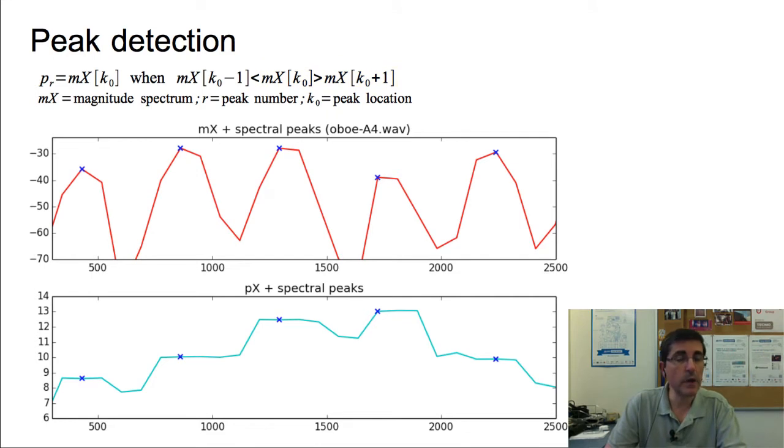In this plot we see local maxima for the different peaks. The crosses, the blue crosses, are local maxima. In the phase spectrum, we basically just read the location of this peak, which is k sub 0. Then we have the magnitude mx of k sub 0, and we have the phase px of k sub 0.